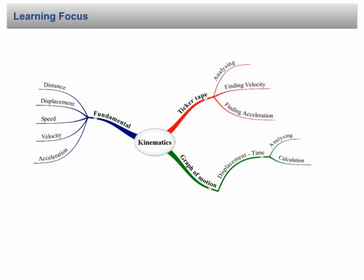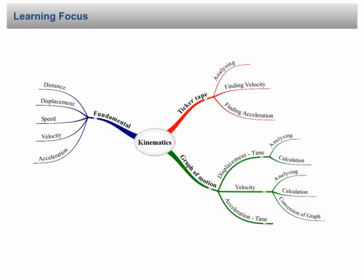In the previous lesson, we learned how to analyze a displacement-time graph and find velocity from it, where velocity equals the gradient of the graph. In this lesson, we are going to proceed to velocity-time graphs, where we will learn how to analyze a velocity-time graph, how to solve calculation questions related to it, and how to convert a velocity-time graph to other graphs.